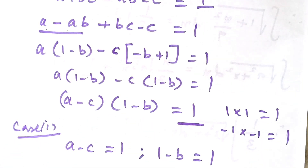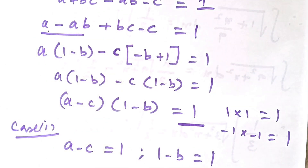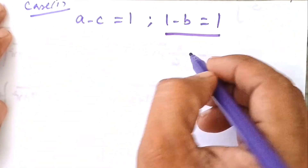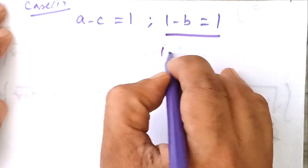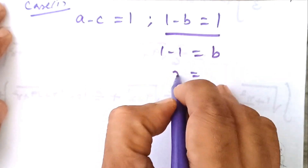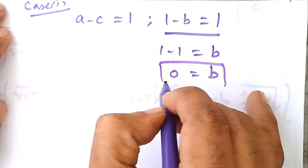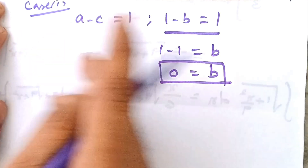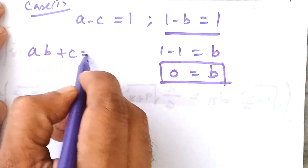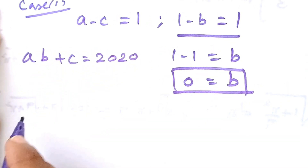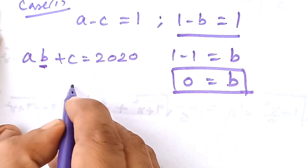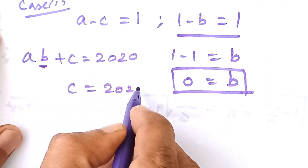Let us solve case by case to get the values of A, B, C. Solving Case 1: 1 minus B equals 1, so B equals 1 minus 1, which means B equals 0. Now substituting B equals 0 into the original equation 1, A·B plus C equals 2020, we get C equals 2020.